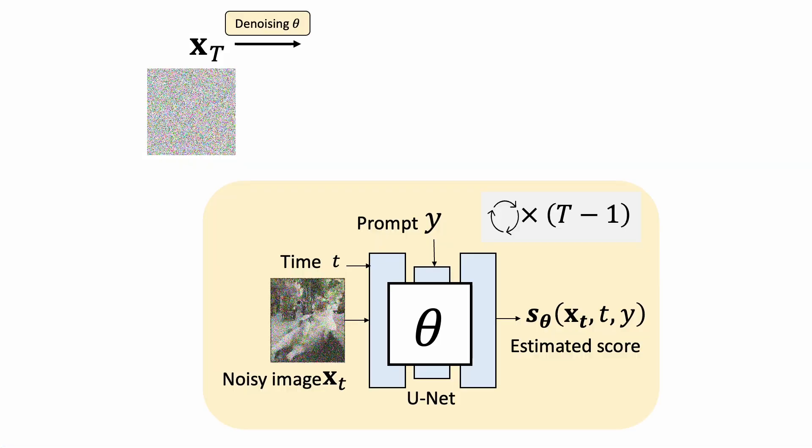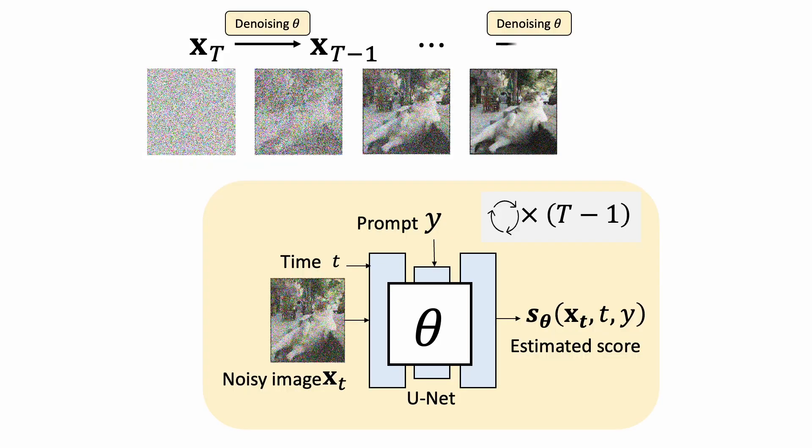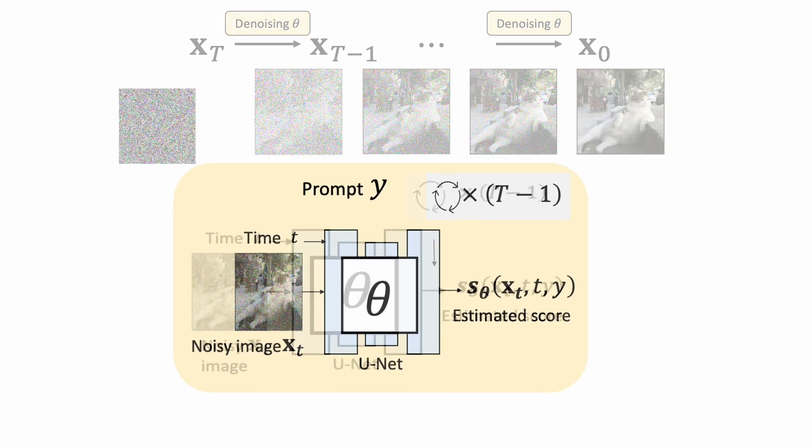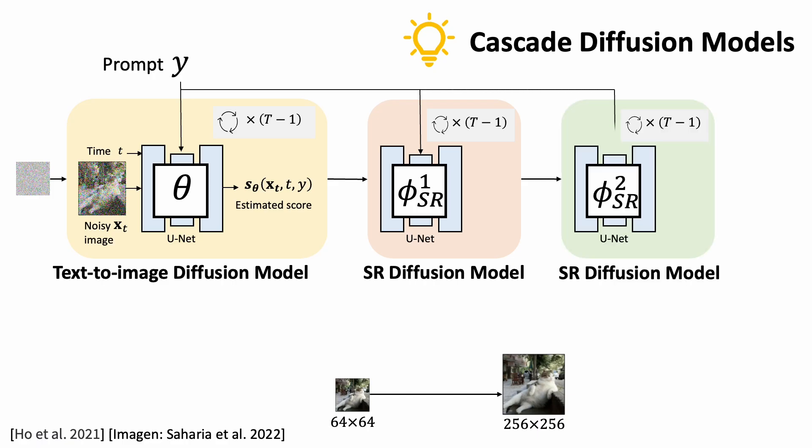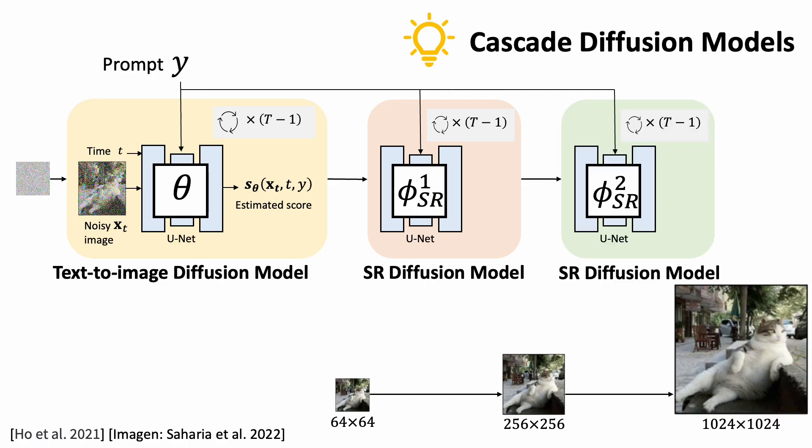How do we generate high-resolution images? There are probably three types of methods. The first one is using cascade. We first use a diffusion model to generate a low-resolution image, say 64x64. We then train a separate diffusion model that upscales the low-resolution image to a higher resolution.